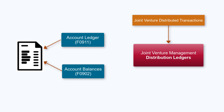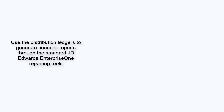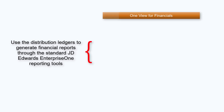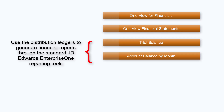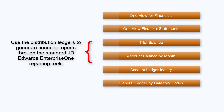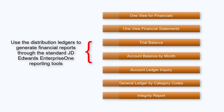This functionality creates F0902 and F0911 records in the specified distribution ledger for the distributed transactions. You can use the distribution ledgers to generate financial reports and statements using standard JD Edwards EnterpriseOne reporting tools such as One View for Financials, One View Financial Statements, Trial Balance, Account Balance by Month, Account Ledger Inquiry, General Ledger by Category Codes, integrity reports, and so on.